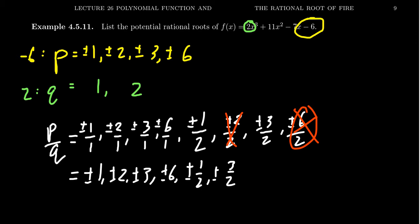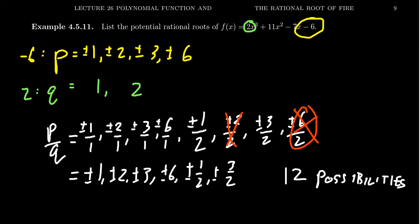That gives us a list of 12 possibilities — 6 terms, each with a plus or minus, so each is doubled. Now that might seem like a lot, but it's a whole lot better than the infinity of possibilities we had before the rational roots theorem. Before, it could be that any number was a root of the polynomial. The fact that we can list it as a finite list is much, much better than infinity.